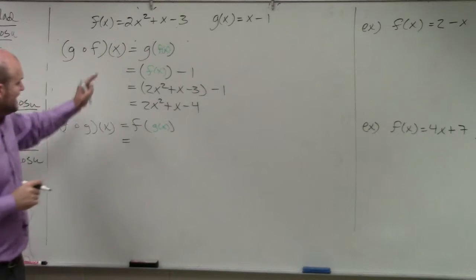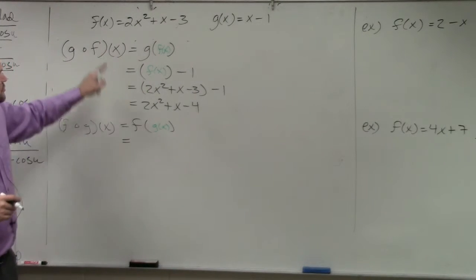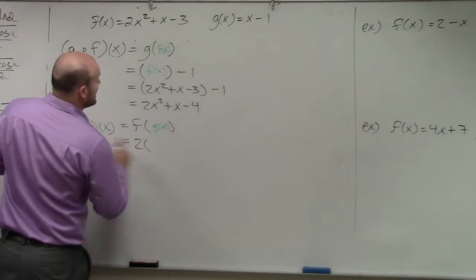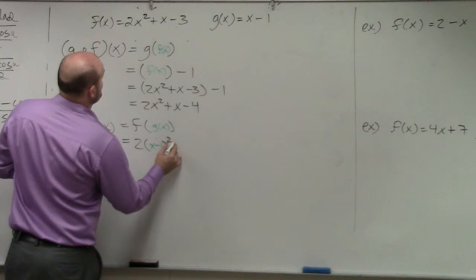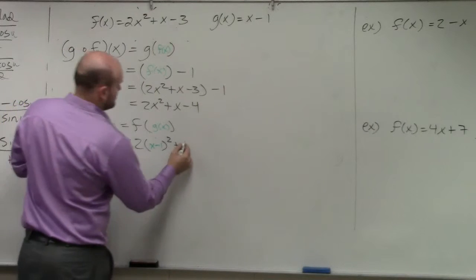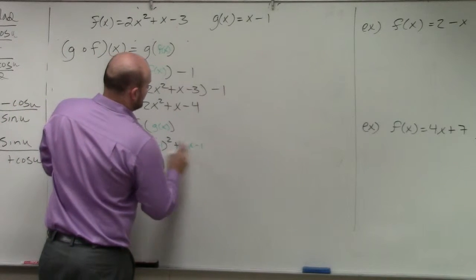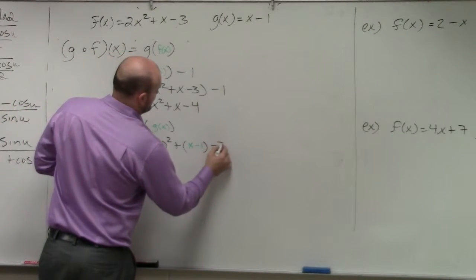When doing that, so now you're going to have 2 times x minus 1 squared plus x minus 1 minus 3.